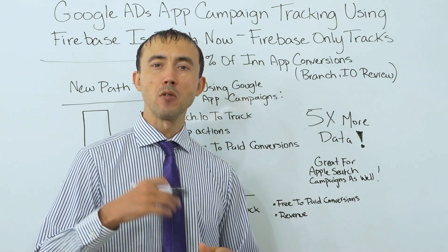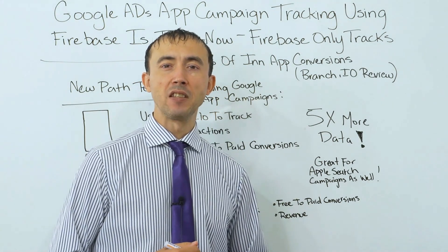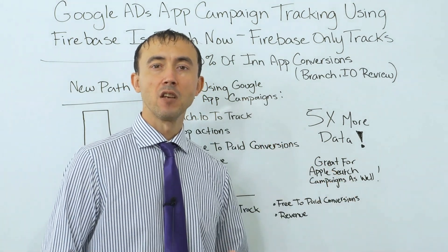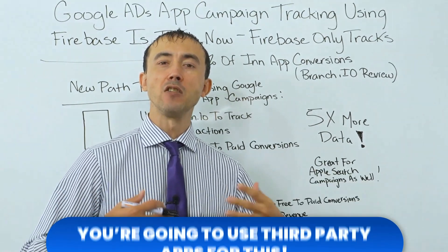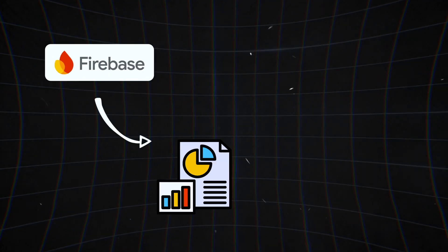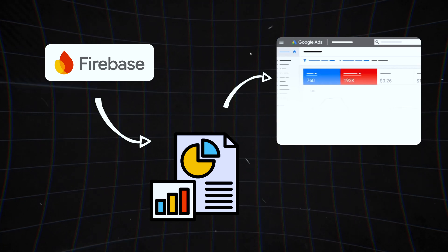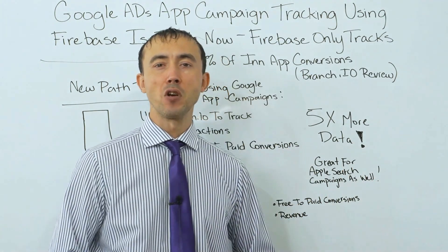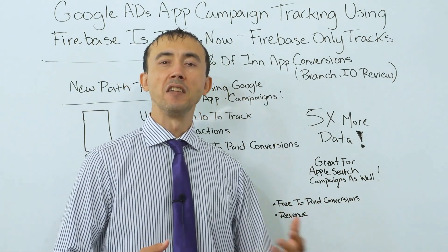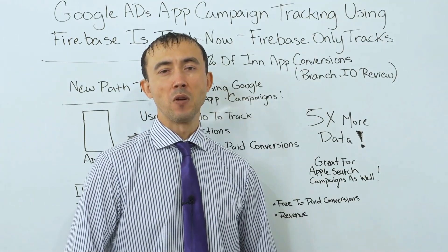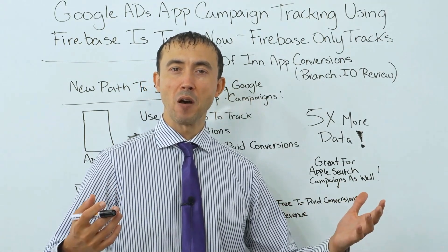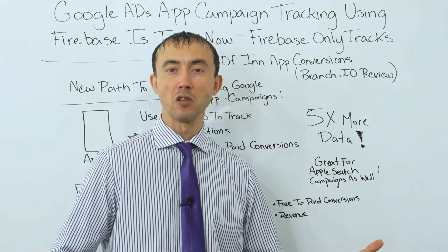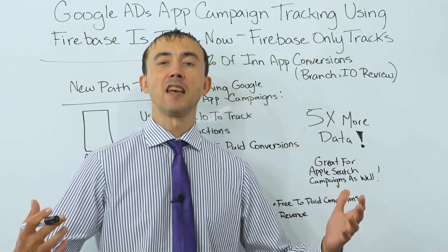There are third-party apps you can use that will actually allow you to track purchases within the app itself, specifically when you're trying to track it inside your Google Ads account for Google Ads app campaigns. You're going to want to use a third-party app for this now, not Firebase sending your revenue data from in-app actions back to your Google Ads account. Before, Firebase did track all the in-app revenue and you could put that back in your Google Ads account. Not anymore — or at least only for Android devices. For Apple devices, it undercounts so much that the data is pretty much useless to build a profitable Google Ads app campaign.